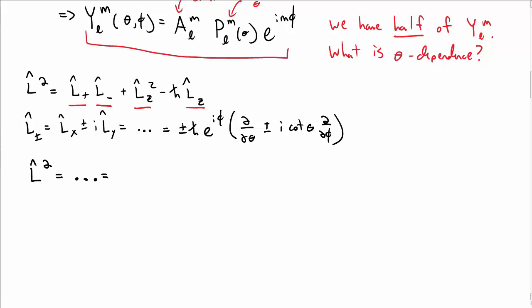Okay, so now I construct L squared, inserting for L plus, L minus, and L_z. Again, there's a lot of algebra in here that's not terribly interesting, so I'm just going to write the end result, though you should make sure that this works. So I have a term entirely with derivatives with respect to theta, and then I have a term entirely with derivatives with respect to phi.